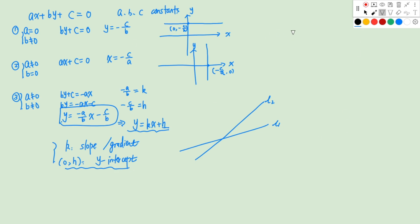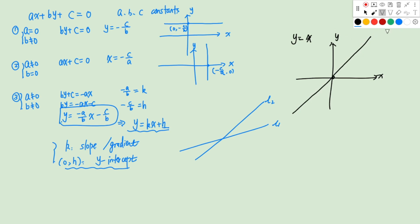Let's take a look at some examples. If I have Y equals to X, this line passes through the origin. We know its slope or gradient equals to 1, and its Y intercept will be (0, 0), because you can think of it as Y equals to X plus 0. So we say (0, 0) is its Y intercept.